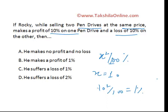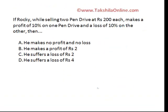Let's take one more example to make the concept crystal clear. Rocky is selling two pen drives at rupees 200 each. He makes a profit of 10% on one pen drive and a loss of 10% on another. The options are: no profit no loss; profit of rupees 2; loss of rupees 2; or loss of rupees 4. You already know there will be a loss, so option A (no profit/loss) and option B (profit of rupees 2) are rejected. You now have two choices: loss of rupees 2 or loss of rupees 4.